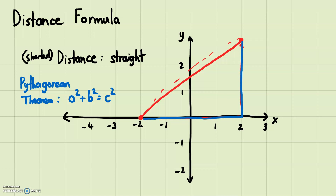The red part is what we're trying to find, and the blue parts are what I'm drawing to help us find that red part. Notice that we have a right triangle here, so if we know how long each leg is, we can use the Pythagorean theorem to find how long the red hypotenuse is.